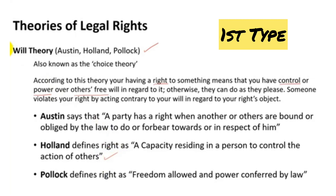In will theory, if I tell you in a very simple way, I have a certain kind of will and I have complete rights to impose this will on another person. For example, I have a property. In that property, I am hiring different kinds of employees, and I am imposing my will on them, telling them to do their own kind of work.